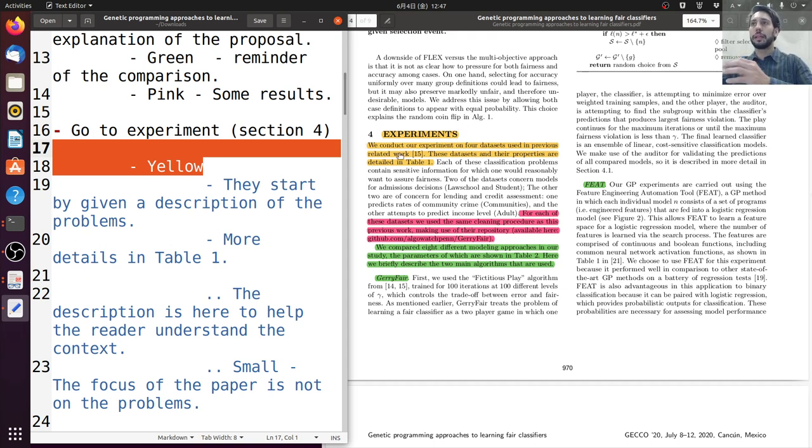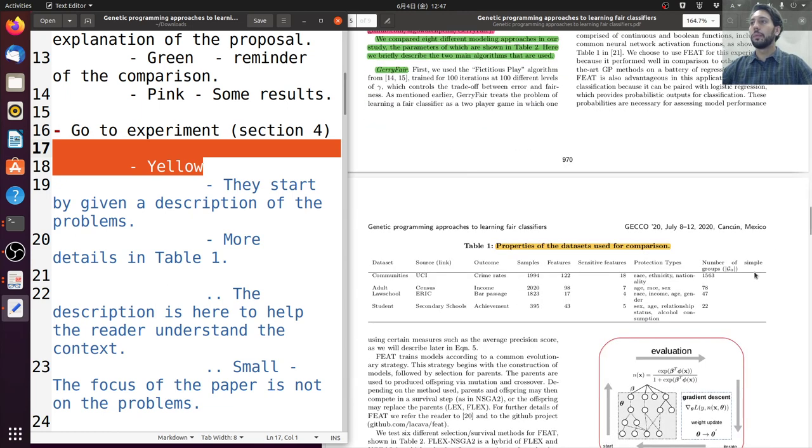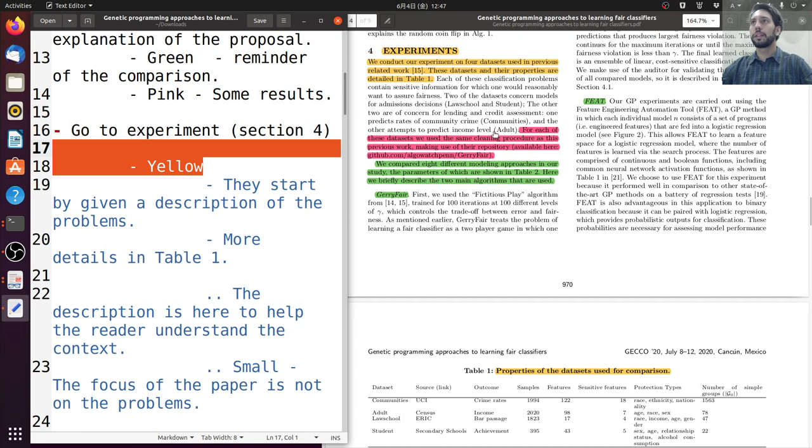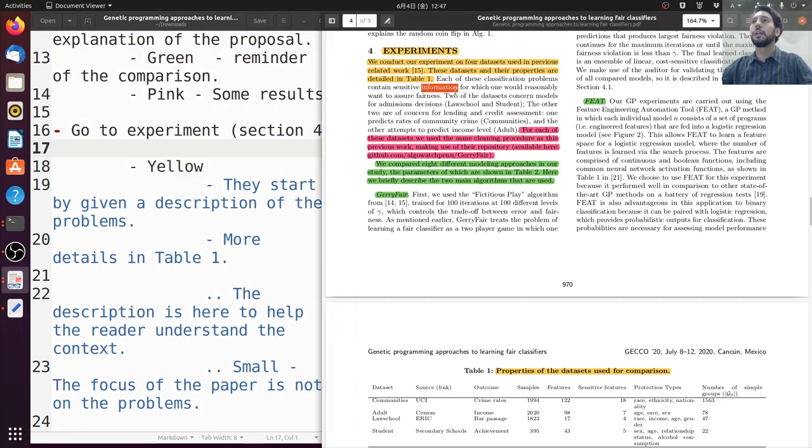It's important to know the main characteristics of this problem. So there are four data sets. They are related with this work. You may check. The details of the data sets and the properties are in table 1. If you move to table 1, you can see a lot of information about this. So name of the data set, source, outcome, and so on and so forth. What is most important about it? So each of these classification problems contains sensitive information.